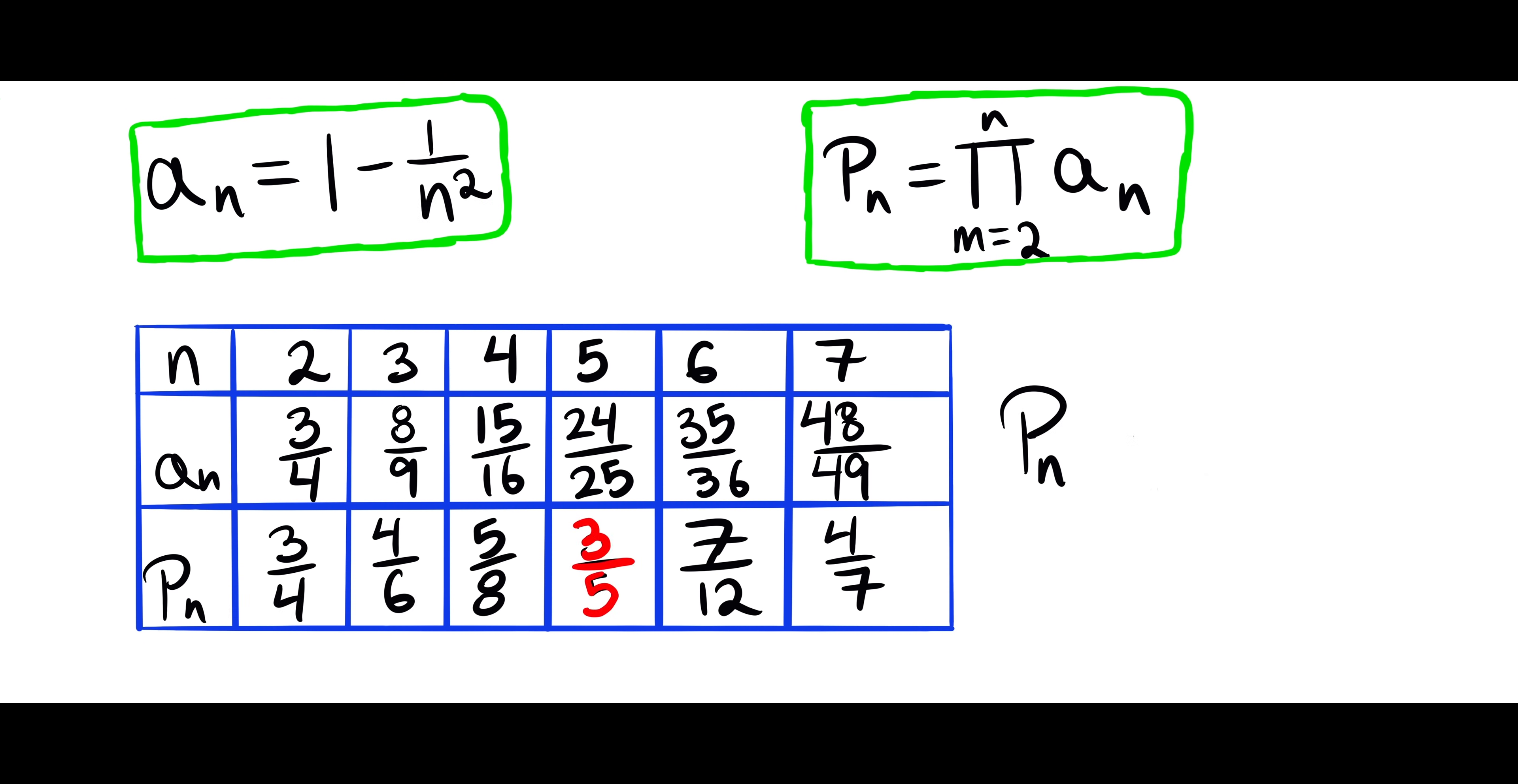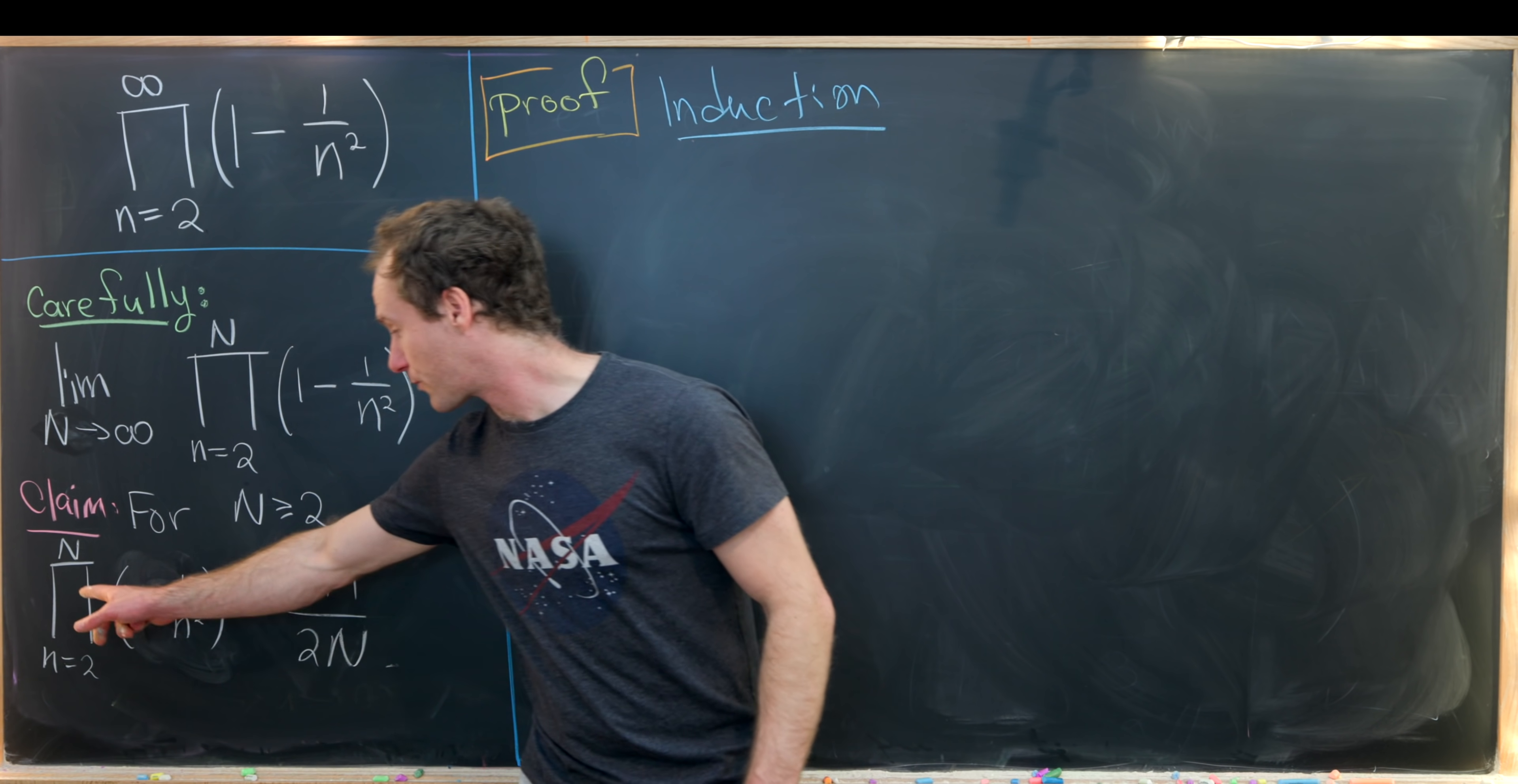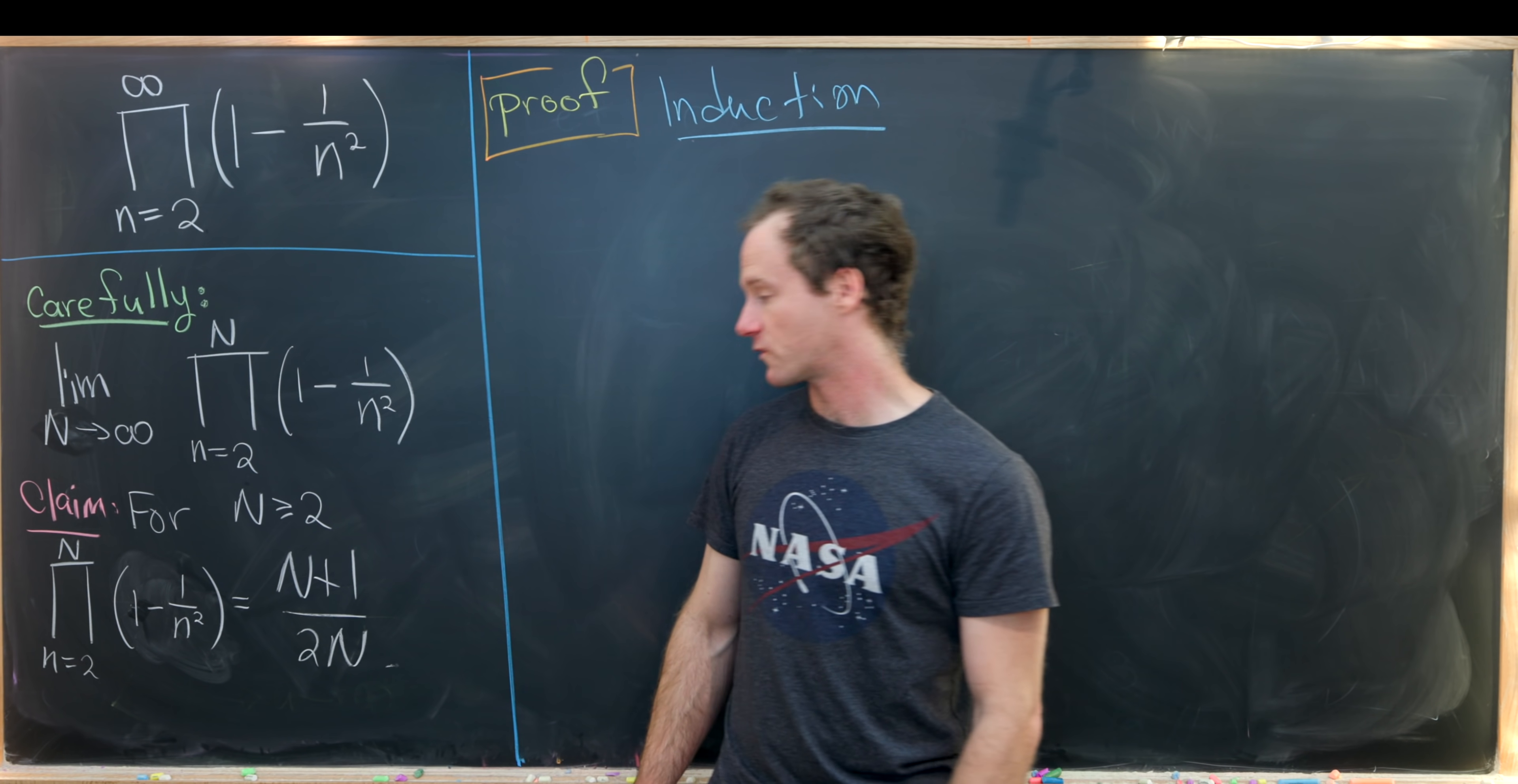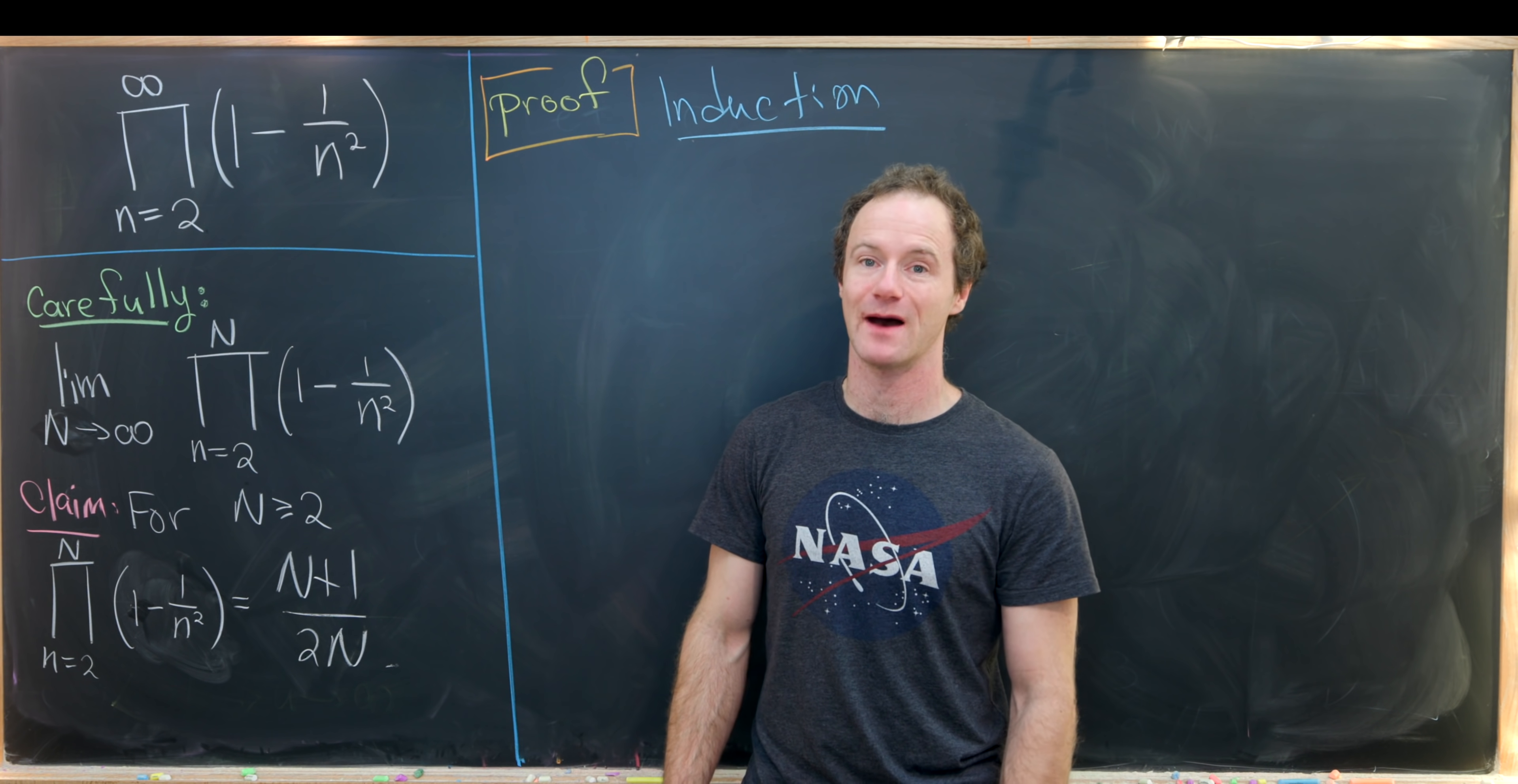We can take this 3 over 5 and write it as 6 over 10. And this 4 over 7 can be written as 8 over 14. Or written carefully in terms of our problem, we have the product as n goes from 2 up to capital N of 1 minus 1 over n squared is capital N plus 1 over 2 times capital N.